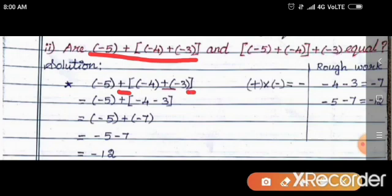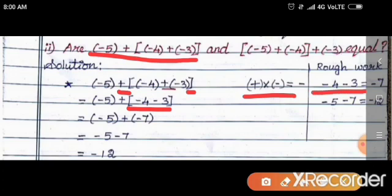Minus 4 stays as it is, and plus into minus gives minus 3. So we have: minus 5 plus of minus 4 minus 3. Same sign numbers — add the numbers and keep the common sign: minus 4 minus 3 equals minus 7. Then minus 5 plus of minus 7 — using plus into minus gives minus — so minus 5 minus 7. Adding 5 and 7 gives 12, so the answer is minus 12.